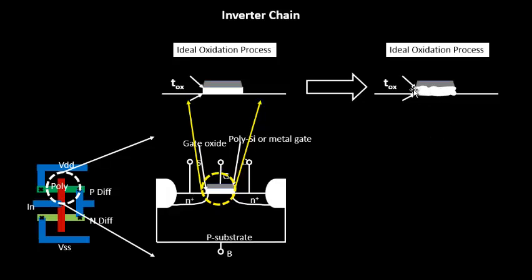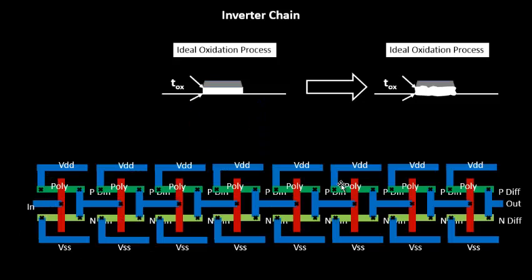This is a variation in oxide thickness for one transistor of a single inverter. Similarly, across a pool of transistors, each transistor will show this oxide thickness variation to some extent. The oxide thickness variation seen for one transistor will be very different from what you see for another transistor.